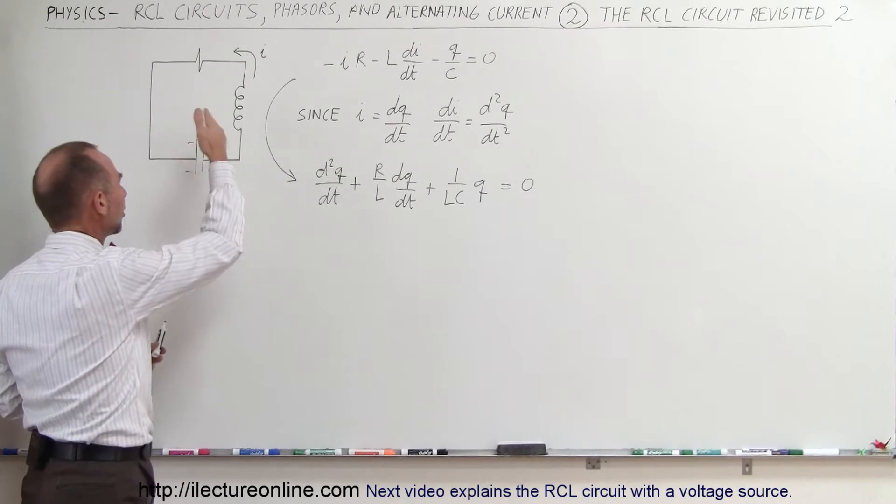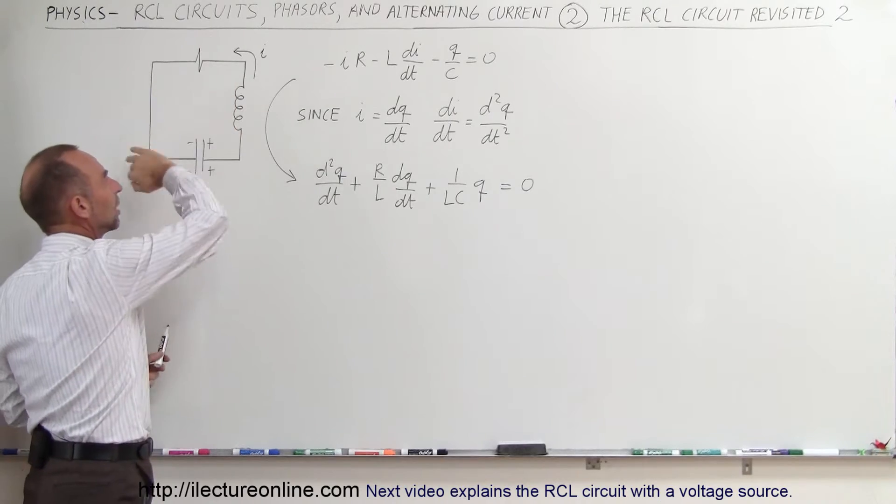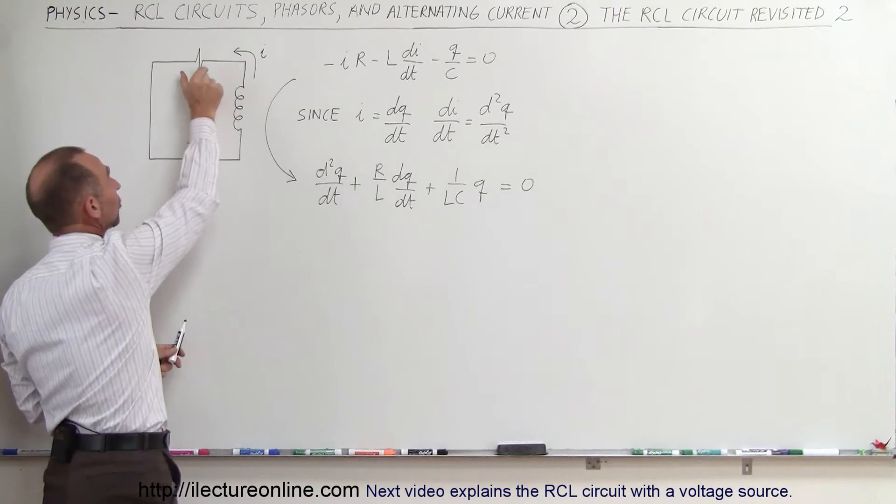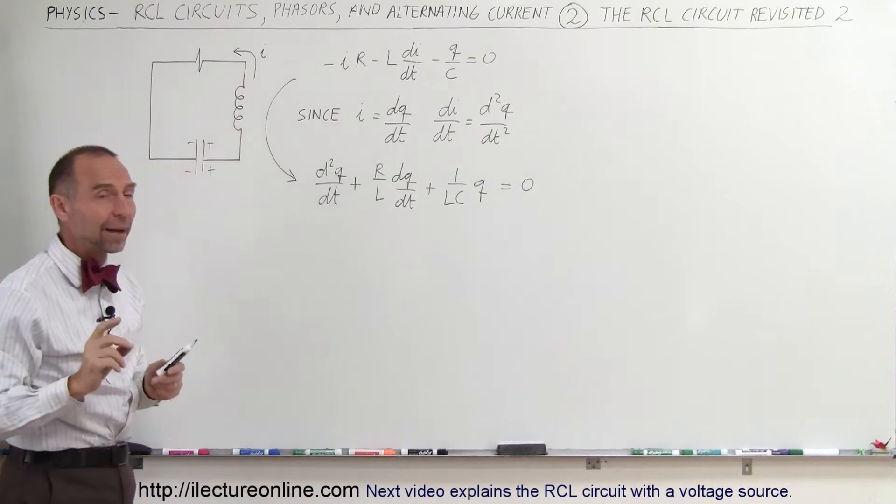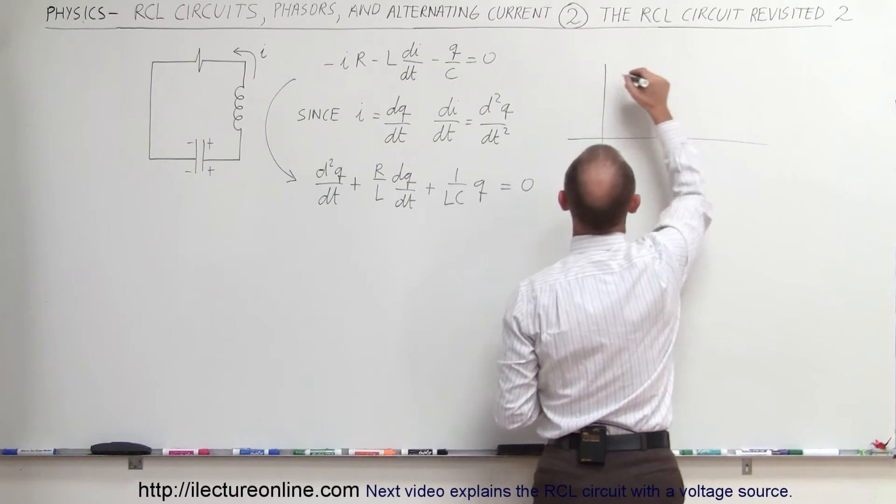When we have an RCL circuit like that, and we initially start with the maximum charge in the capacitor, and then let the charge oscillate back and forth, we realize that energies are going to be taken out of the circuit by the resistor. We know that the oscillations should look something like this over time.